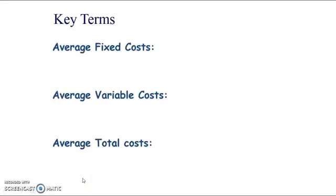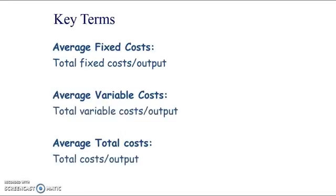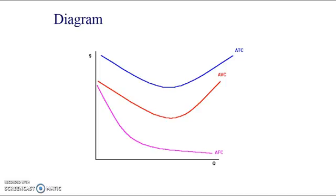More definitions: average fixed costs is total fixed costs divided by output. Average variable costs is total variable costs divided by output. And average total costs is total costs divided by output.